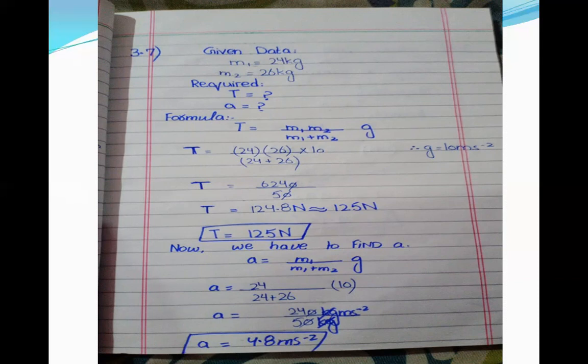We will find tension and acceleration. The formula T equals m1·m2 divided by (m1 plus m2), multiplied by g, is given on physics textbook page 67, because one mass is horizontal on the table and one is hanging. Putting in m1, m2, and simplifying, the tension is 125 N.